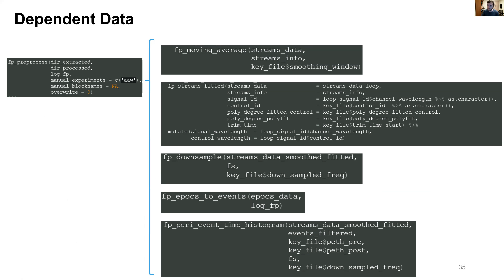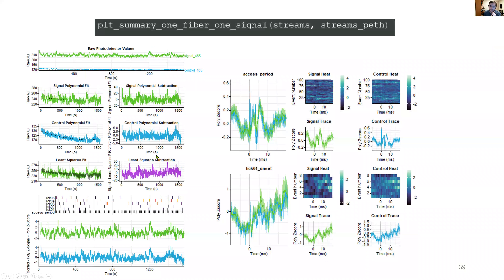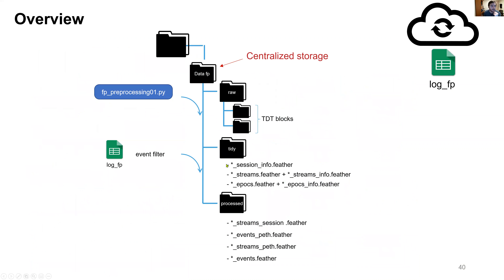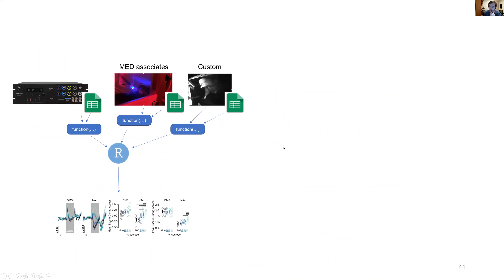If you want to do some new form of normalization, all you have to do is modify this function — the way it's written, anything to the right of time automatically gets included in all other analyses and functions from there. Once you add a new column it'll automatically be kept with the rest of your data. Something I'm working on is automated plotting for the pre-processing step — after extracting everything, a script automatically plots your signal, control, all fits, normalizations, and peri-event time histograms. Once set up for different configurations, you can automatically have a snapshot of what your recording session looked like.